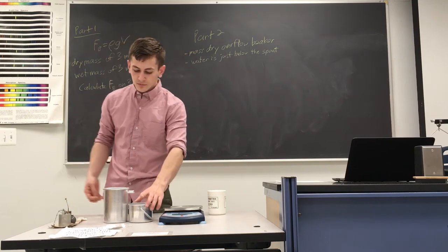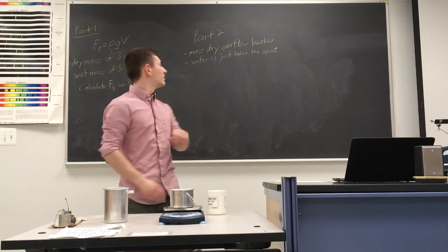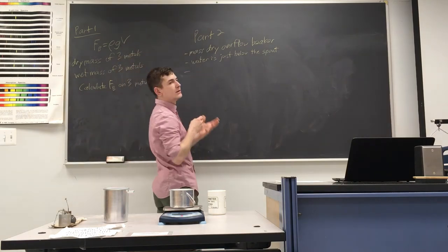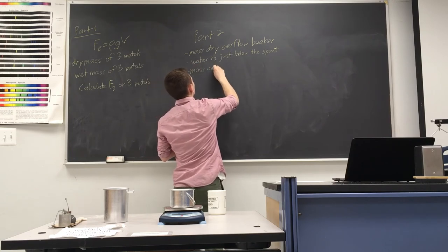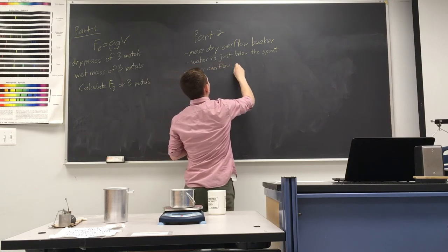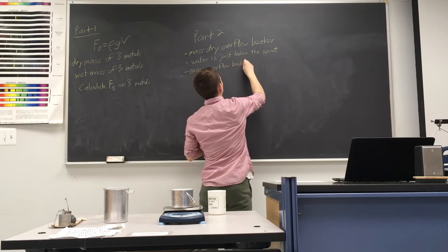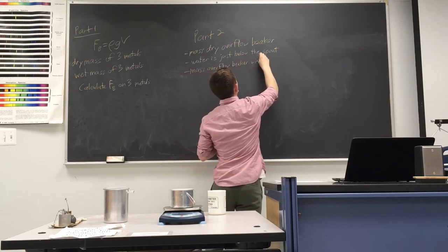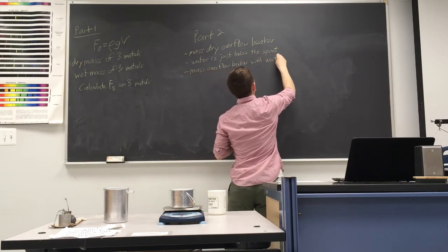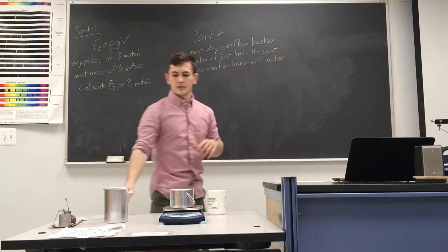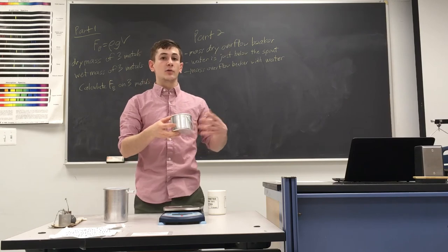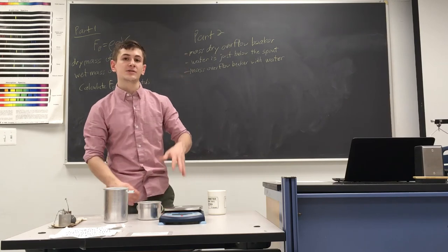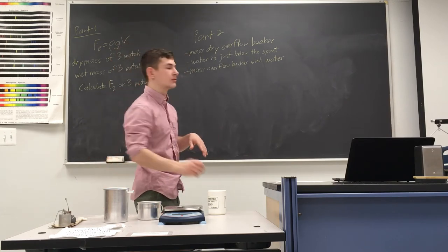So once you have that, mass this again. You want to mass the overflow beaker with water. Now, since you know the mass of the beaker with water inside of it and with no water, you can figure out the mass of the water that was displaced from the large beaker.